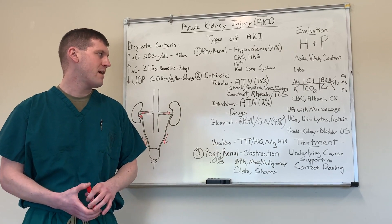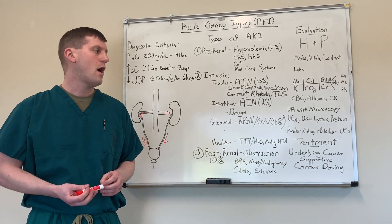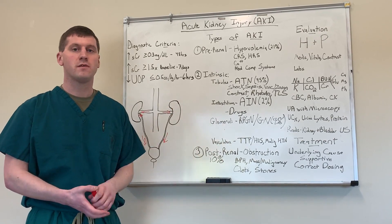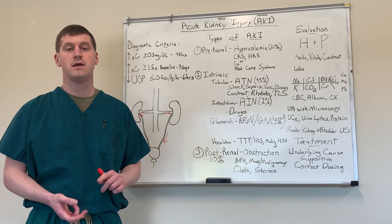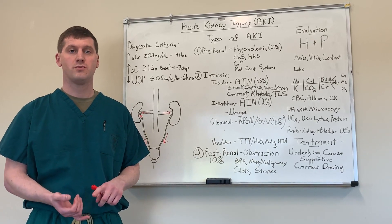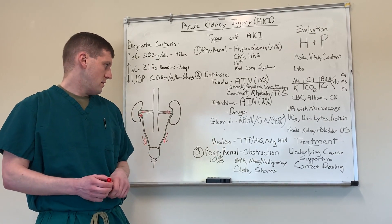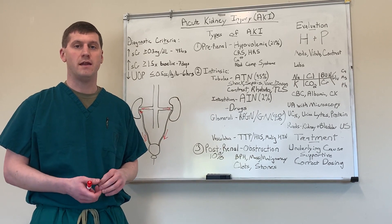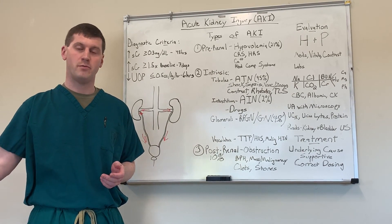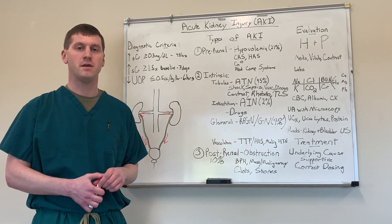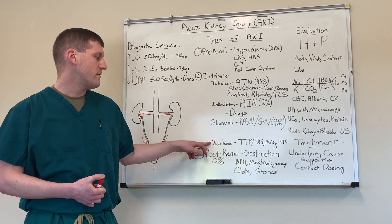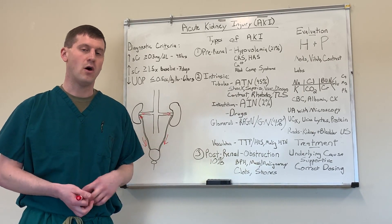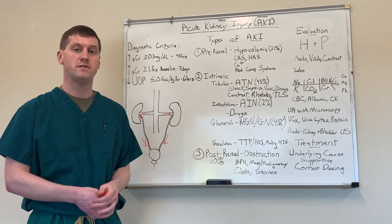Within the interstitium, we can have acute interstitial nephritis. This is a much less likely thing to encounter — about two percent of patients who develop an AKI. It's mostly due to drugs, and the most common offending agents are going to be penicillins, cephalosporins, PPIs, and sulfa drugs including loop diuretics. Within the glomeruli, we'd be most concerned about an RPGN — rapidly progressing glomerular nephritis — or a regular glomerular nephritis caught later on. And within the vasculature, we can see TTP, HUS, malignant hypertension, and sclerodermal renal crisis.